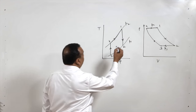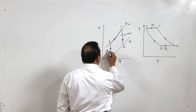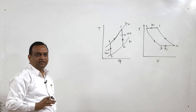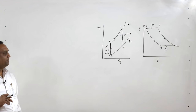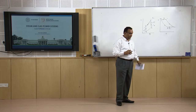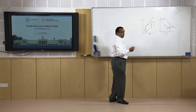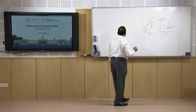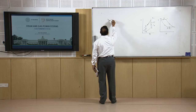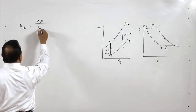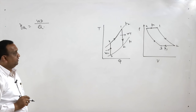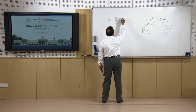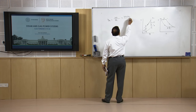Now, the remaining part is the work of the turbine minus the work consumed by the compressor. First of all we will find the thermal efficiency of this cycle. Thermal efficiency means net work done divided by the heat added. So thermal efficiency is work of the turbine minus work of the compressor, divided by heat added.